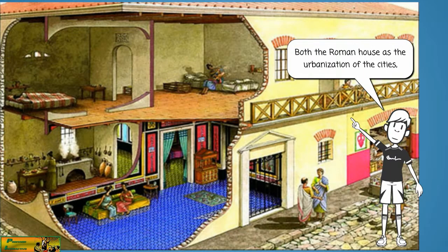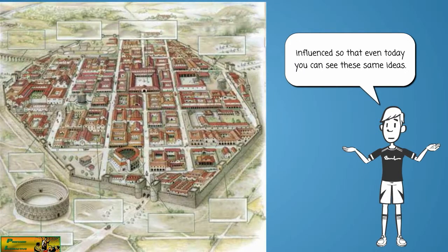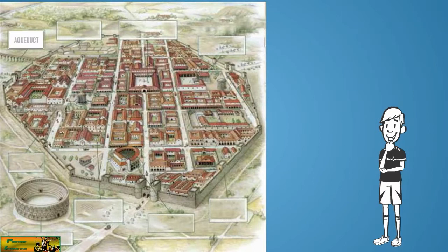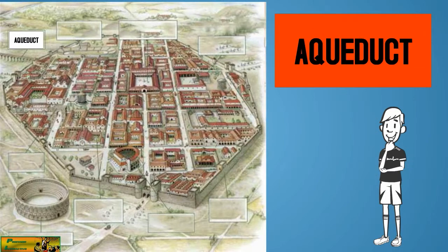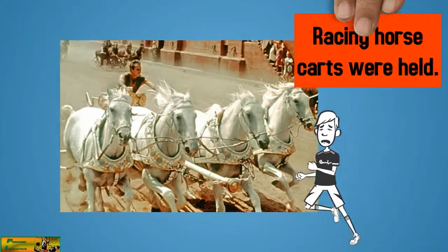Both the Roman house as the urbanization of the cities influenced so that even today you can see these same ideas. Aqueduct. Circus, where racing horse carts were held.